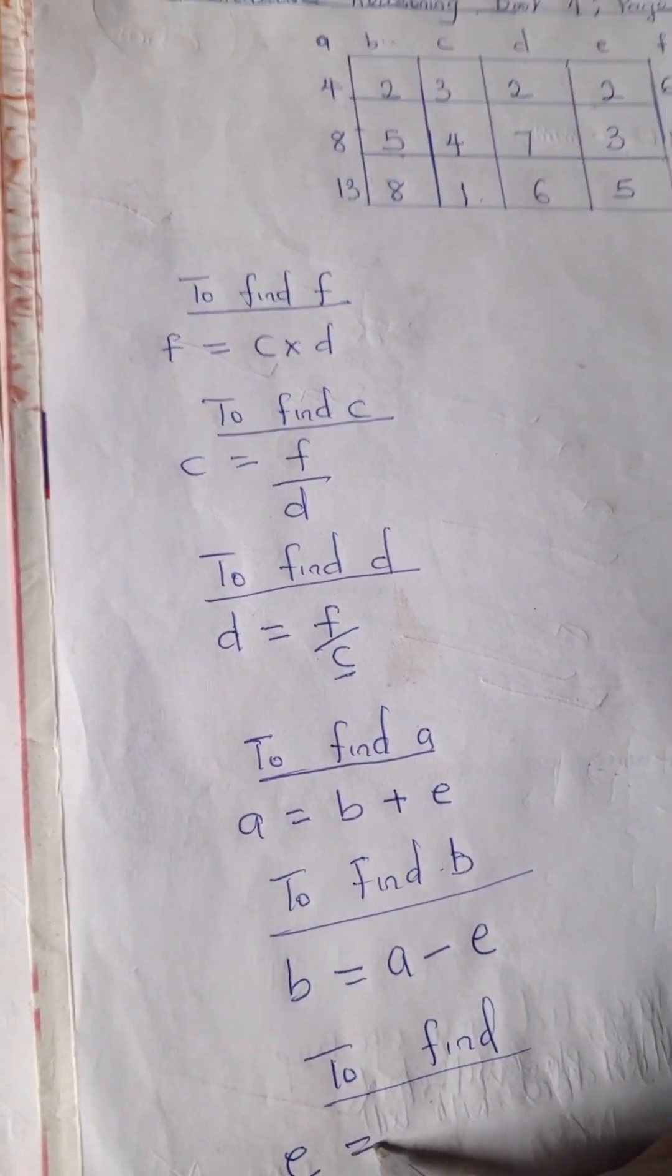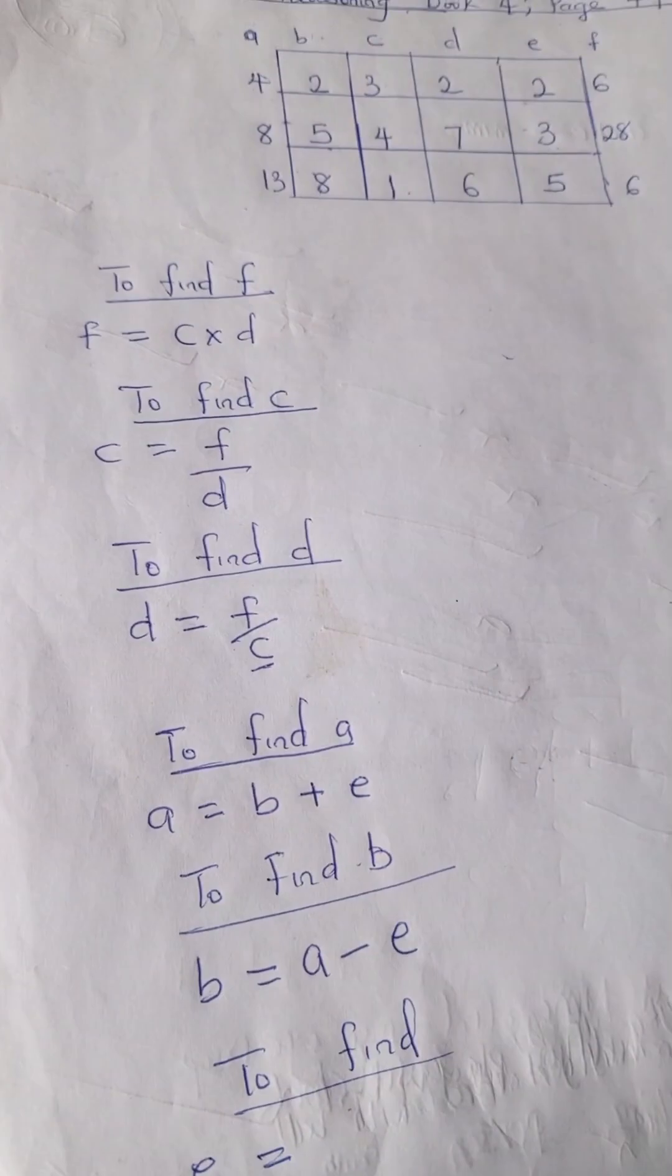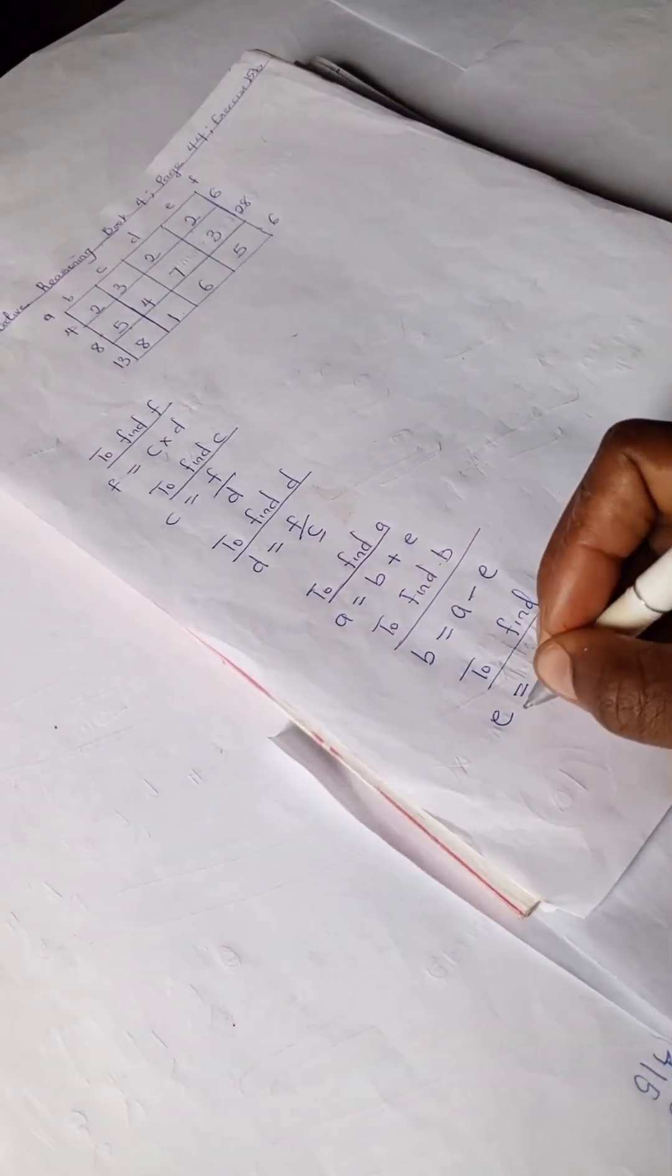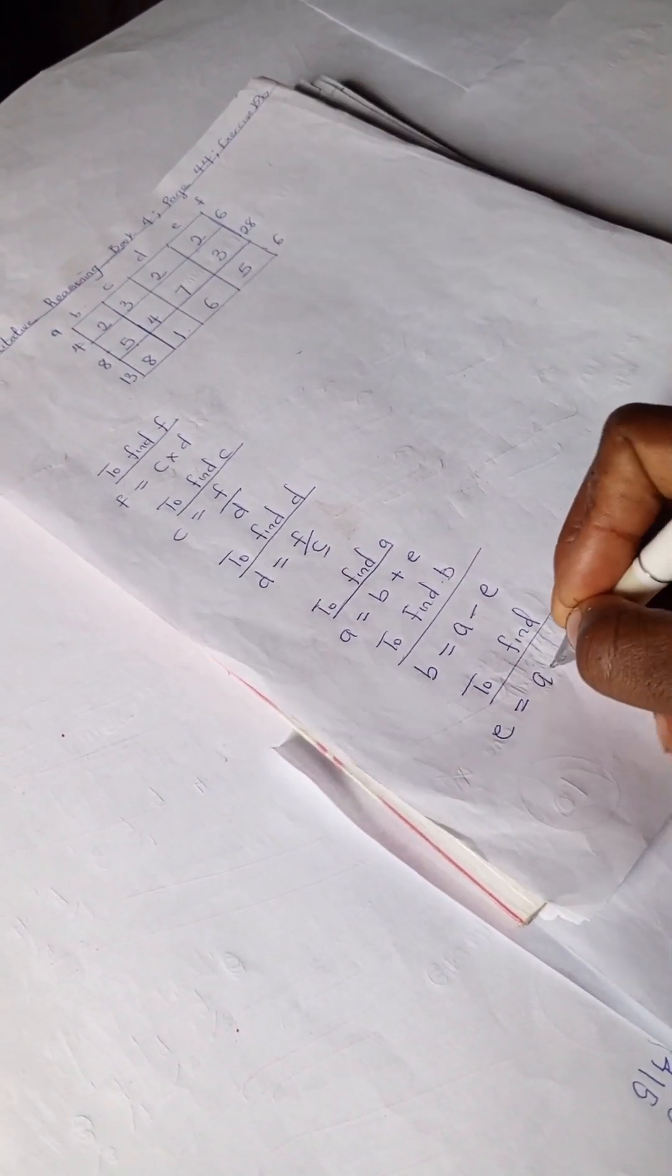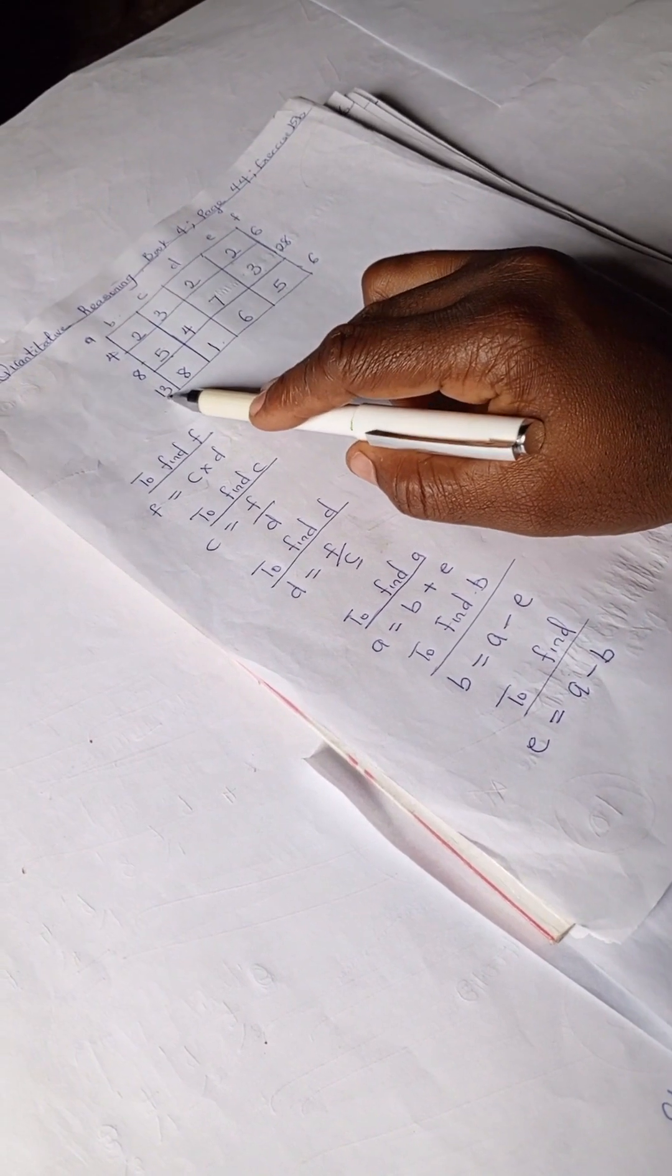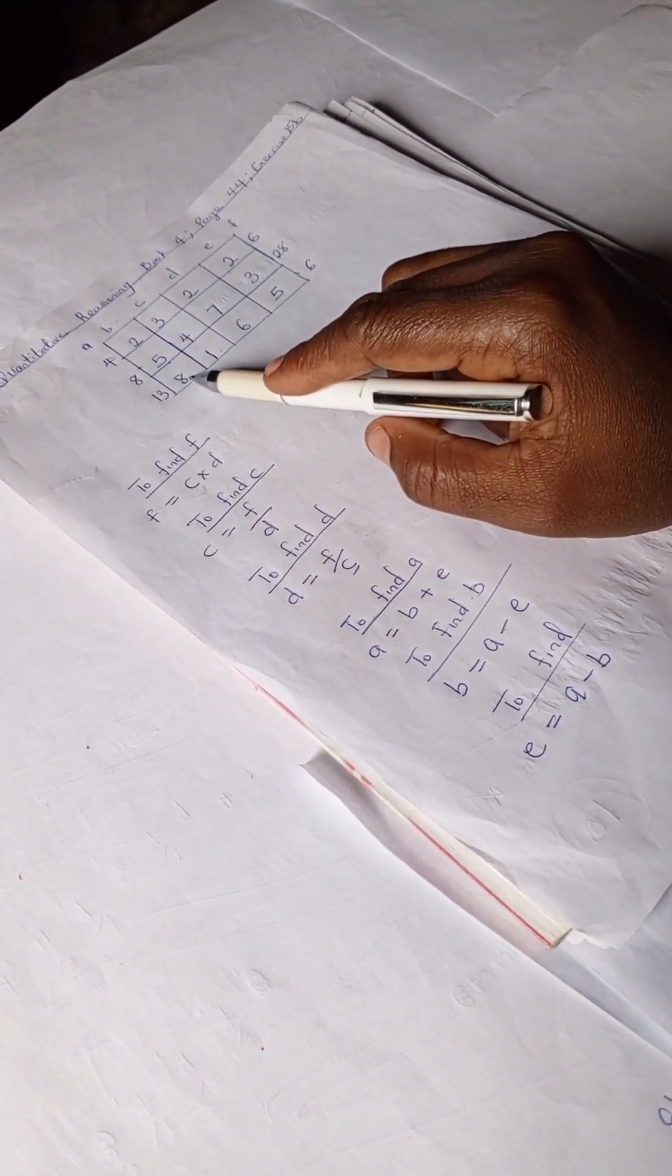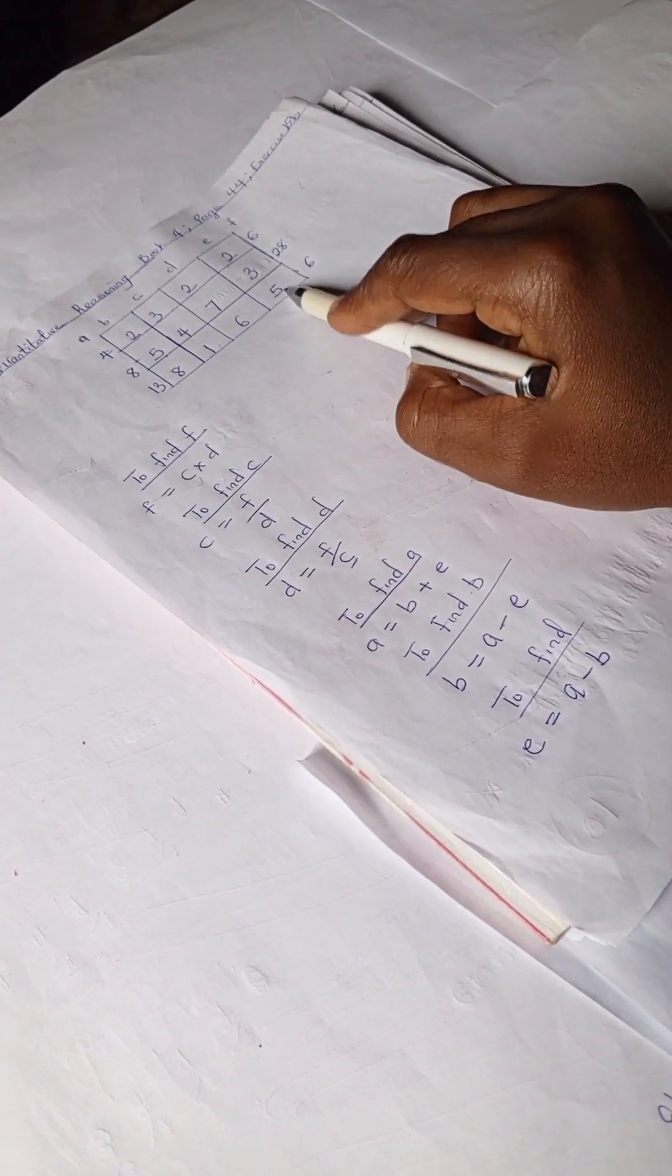So to find our E, we have A minus our B, right? So if we're to use this, we have A, which is 13 minus 8, and it's going to give you your E.